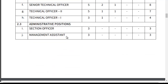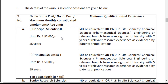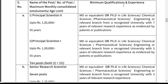Now the qualifications and experience requirements: For Principal Scientist Grade 2 — salary up to ₹1,92,000, age limit 55 years. Minimum qualification: PhD in Life Sciences, Chemical Sciences, or Pharmaceutical Sciences, with 7 years relevant research experience as evidenced by patents or publications.